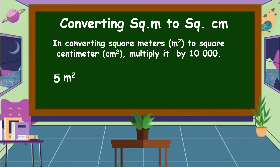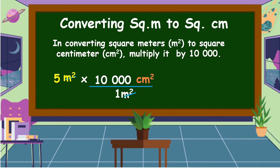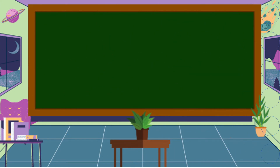For example, convert 5 square meters to square centimeters. We multiply by ten thousand: 5 times (ten thousand square centimeters over one square meter). We cancel square meters in both numerator and denominator. Five times ten thousand equals fifty thousand. Therefore, 5 square meters is equal to 50,000 square centimeters.